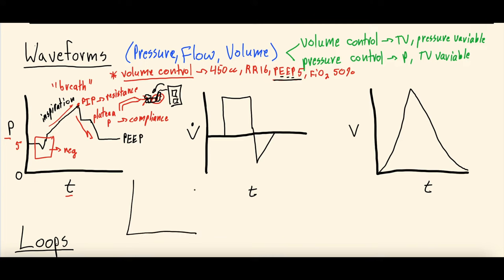This is what a pressure-volume loop tends to look like on the ventilator. It does not start at a pressure of zero — it starts at the PEEP value, because there's always pressure in the circuit. It starts at a volume of zero. If we split this loop down the middle, we have the inspiratory limb and the expiratory limb.